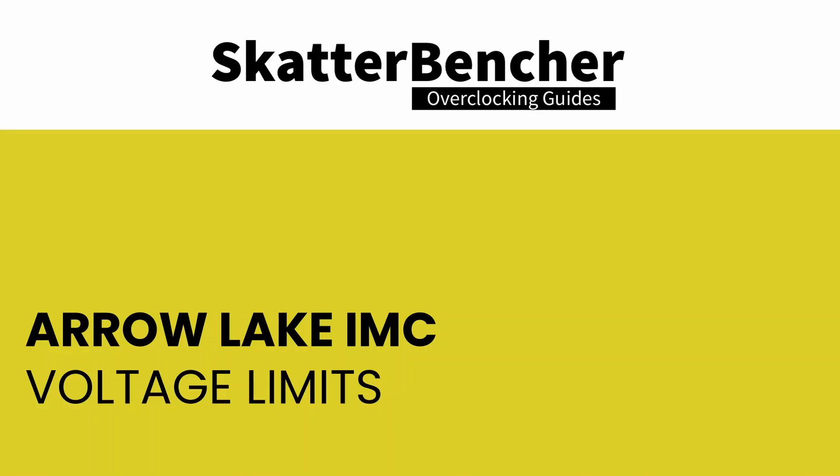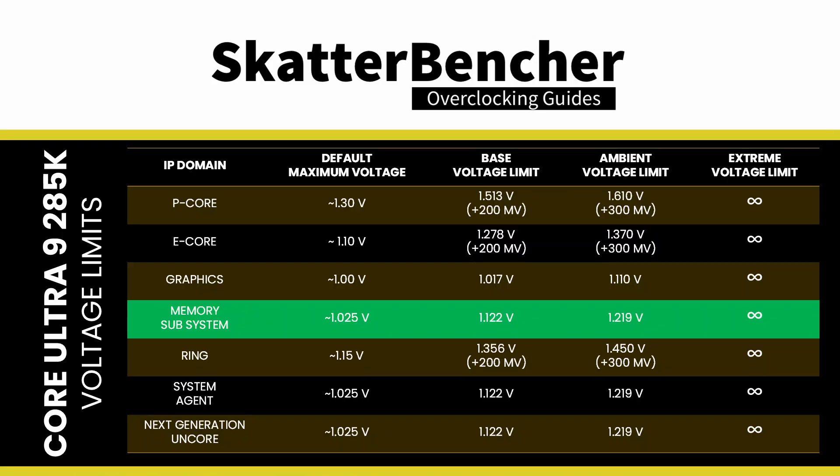To safeguard the processor, Intel has imposed strict voltage limits on the MEMSS — the MEMSS cannot request higher voltages to the CPU power control unit. By default, the voltage limit for the MEMSS is 1.122 V, but this can be increased to 1.219 V under ambient conditions. When the temperature is below 10 degrees Celsius, you can further increase the voltage limit or disable the limit altogether. Unfortunately, you cannot set the MEMSS voltage limit independently in the ASUS ROG BIOS.